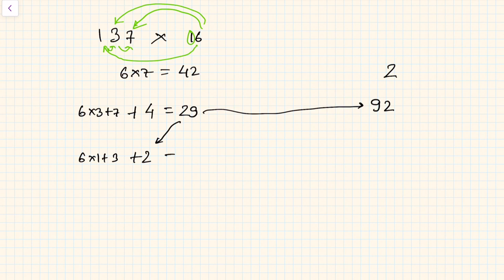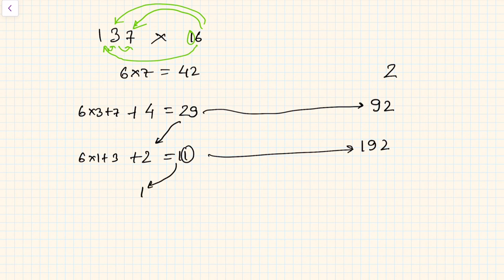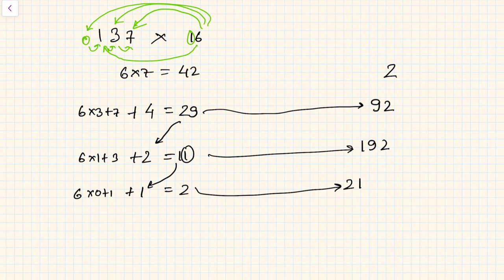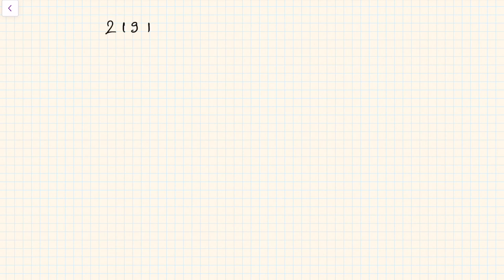Then take 6, multiply by 1, and add 3: 6 into 1 plus 3 = 9, plus carry 2 = 11. Write 1, carry 1 — it becomes '192'. Then 6 into 0 plus 1 = 1, plus carry 1 = 2. This 2 goes here making '2192'. The answer is 2192.